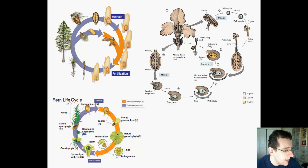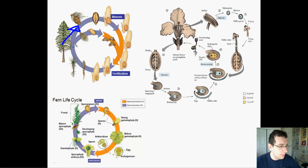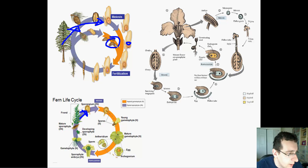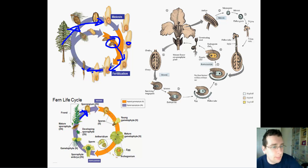Something similar happens in gymnosperms: the plant makes a structure designed to create spores, differentiating through mitosis into a sporangium, which undergoes meiosis to form a spore. That spore undergoes mitosis to form seeds — an ovum seed and a male pollen seed. Those act through fertilization to form a diploid seed, which then grows by mitosis and differentiation back into the adult sporophyte.